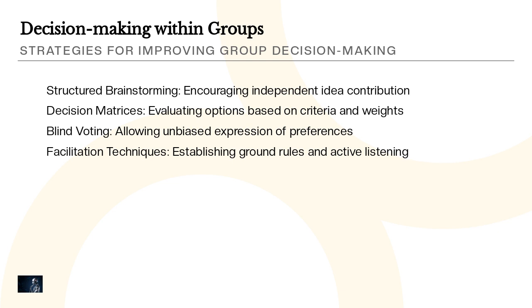In order to improve group decision-making, there are several strategies that can be employed. Structured brainstorming encourages independent idea contribution, allowing for a wide range of perspectives to be considered. Decision matrices provide a systematic way to evaluate options based on criteria and weights, helping to make more informed decisions. Blind voting allows for unbiased expression of preferences, ensuring that individual biases do not influence the decision-making process. Facilitation techniques, such as establishing ground rules and active listening, can help to ensure that all voices are heard and considered.